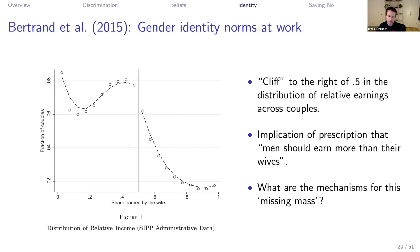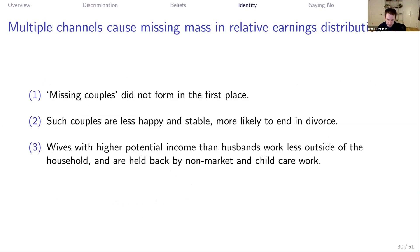In addition to working less outside the household, women are also held back by non-market and childcare work. Women who earn just a little bit more than their husbands tend to do more non-market and childcare work — often called the second shift. The husband's ego or identity gets threatened by the woman earning more, so the woman ends up not only working more and being more productive outside the home, but also doing more work at home on top of that.